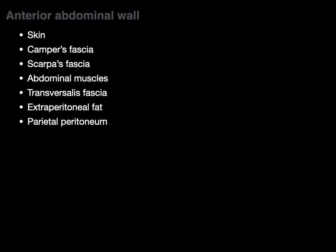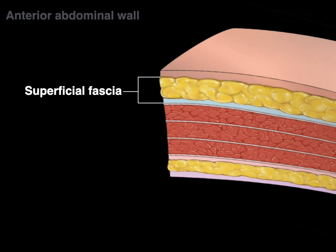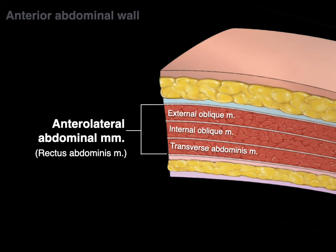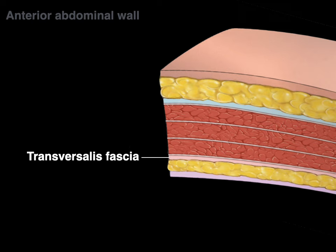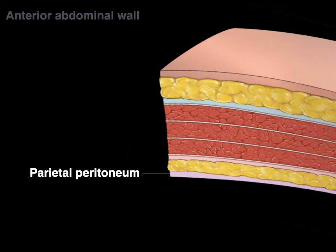Looking at the layers of the abdominal wall: there's the skin — epidermis and dermis — then the superficial fascia or hypodermis. In the abdomen there are two layers of superficial fascia: Camper's fascia, which is fatty, and Scarpa's fascia, which is membranous. Below the umbilicus, Scarpa's fascia is most prominent and needs to be sutured independently. Then there are the anterolateral abdominal wall muscles, the transversalis fascia deep to the transverse abdominus, and then extraperitoneal fat that binds the parietal peritoneum to the abdominal body wall.